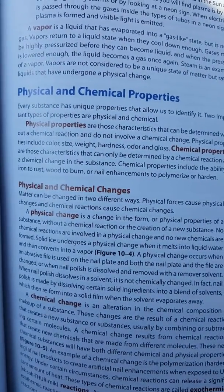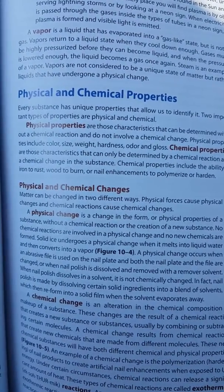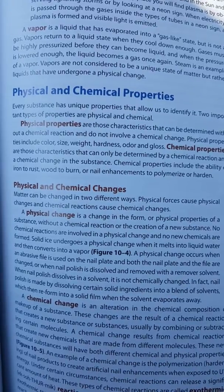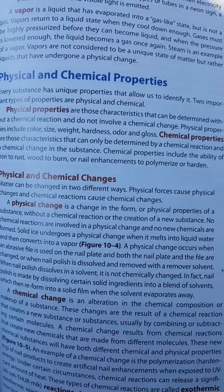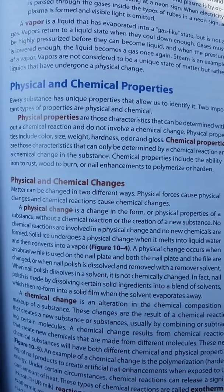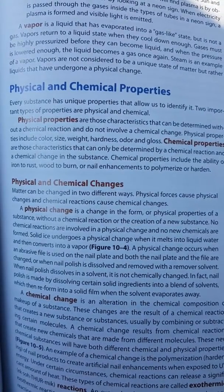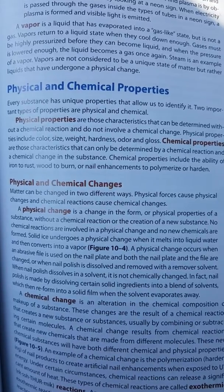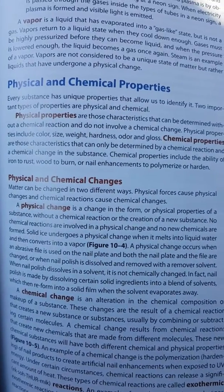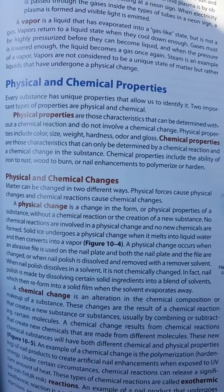Physical and chemical changes. Matter can be changed in two different ways: physical forces cause physical change and chemical reactions cause chemical changes. A physical change is a change in the form or physical properties of a substance without a chemical reaction or the creation of a new substance. Solid ice undergoes a physical change when it melts into liquid water and then converts to vapor. A physical change occurs when an abrasive file is used on the nail plate, or when nail polish is dissolved and removed with a remover solvent. When nail polish dissolves in a solvent, it is not chemically changed. Nail polish is made by dissolving certain solid ingredients into a blend of solvents, which then reform into a solid film when the solvent evaporates away.